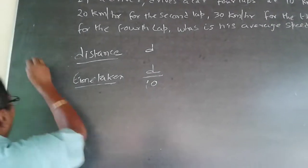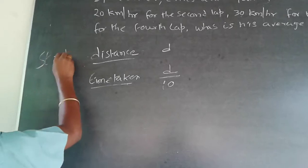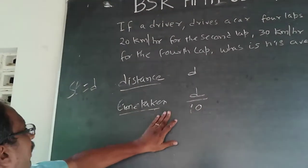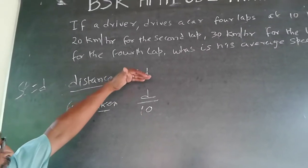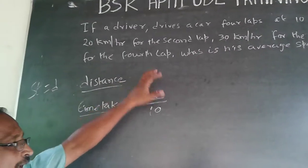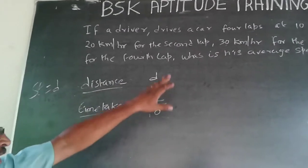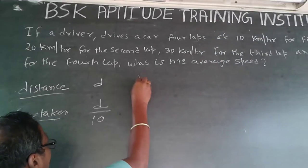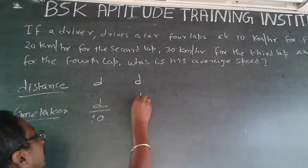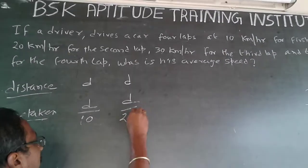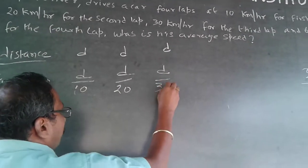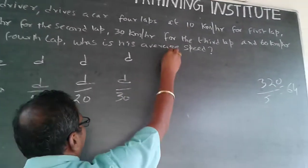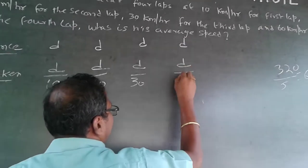Speed × time = distance, so time = distance ÷ speed. Time taken for the 1st lap is D/10, for the 2nd lap D/20, for the 3rd lap D/30, and for the 4th lap D/60.